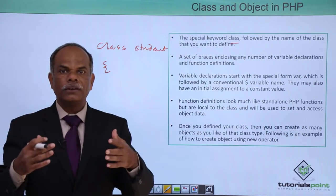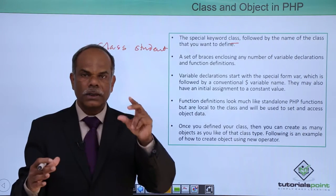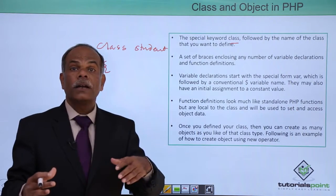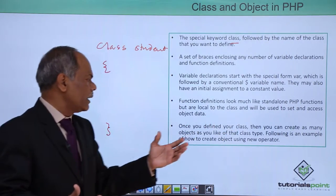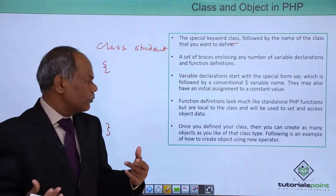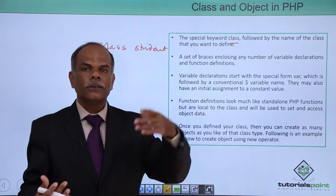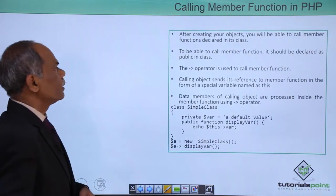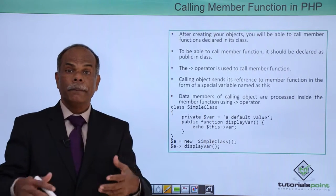Once you have finalized the class definition — what the attributes should be and what the functions should be — you can create an object. Once you have defined your class, you can create any number of objects as per the requirement of your program, and using the object you can call the functionality inside the class. After creating the objects, you will be able to call the member functions.